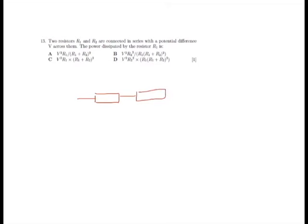Now they all look a bit intimidating, but let's draw out our circuit. We've got our two resistors there, R1 and R2. And then if we add a power supply across them, providing an EMF of V.